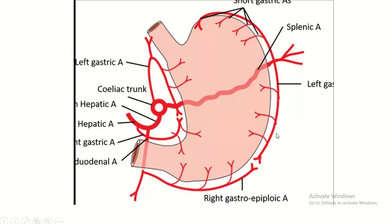This is the location of the greater omentum. The left gastroepiploic artery arises from the splenic artery, which is a direct branch of the celiac trunk. The right gastroepiploic artery arises from the gastroduodenal artery, which arises from the common hepatic artery.